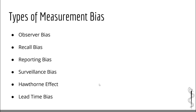So what are the most common and important types of measurement bias? They are: observer bias, recall bias, reporting bias, surveillance bias, the Hawthorne effect, and the lead time bias.